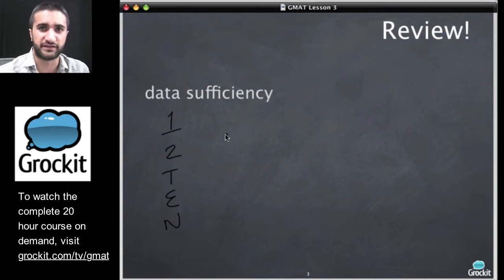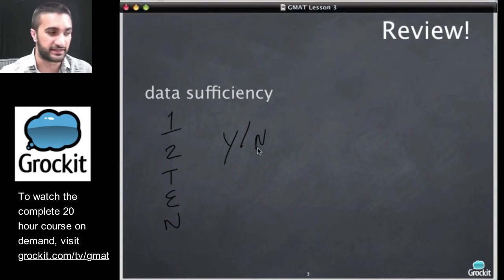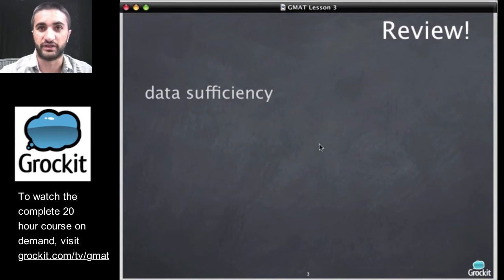And the other thing that we learned about data sufficiency questions is that there's a specific type, the yes-no data sufficiency that can even get a little bit more complicated. The thing to remember is that if we get a consistent no answer, then we have sufficient information. If we get a consistent yes answer, we have sufficient information. If you're consistent in one direction, then you know you have enough information.